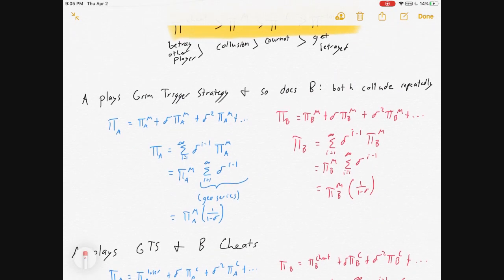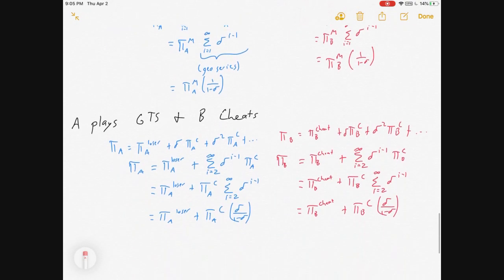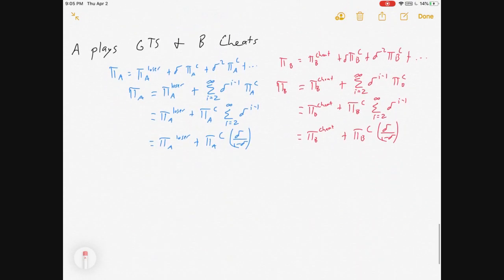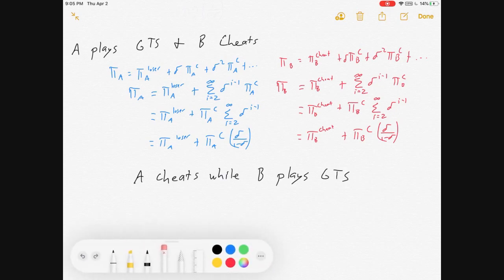If your sum is the same profit forever from 1 to infinity, it's just times 1 over 1 minus delta. If you have one profit in period 1, and then a different profit from period 2 forevermore, it looks like this: the period 1 profit plus delta over 1 minus delta times your competition profit.